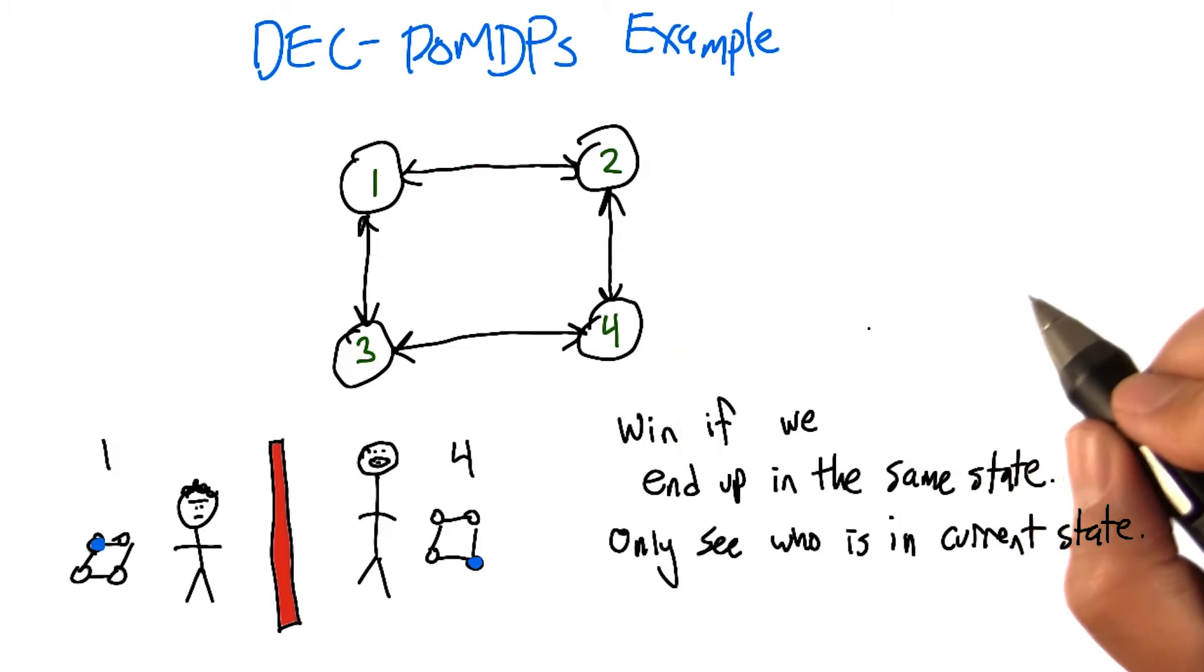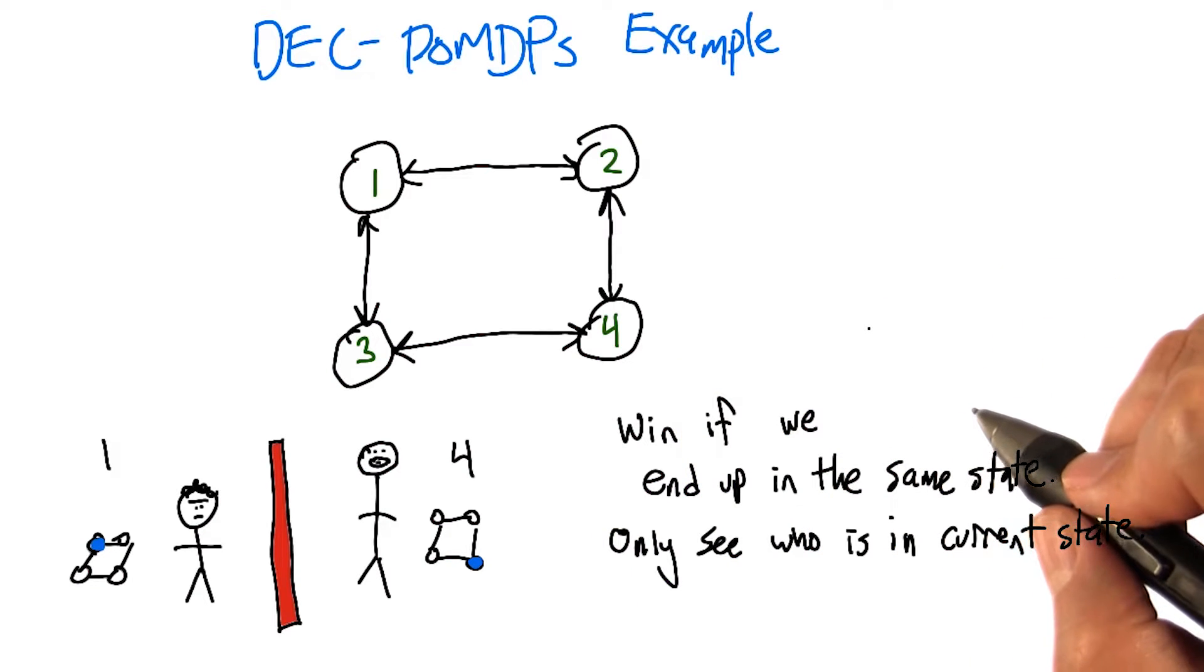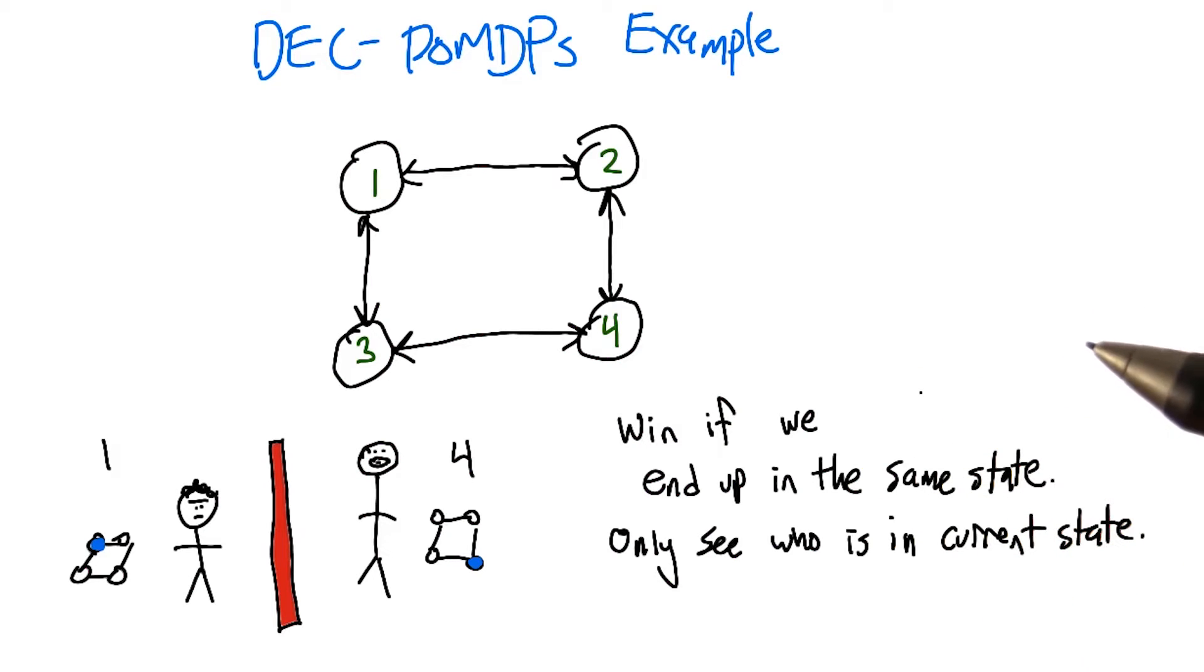You can go basically north, south, east, west, or stay put. And we're going to move simultaneously. If a turn ends and we're both in the same place, we win.